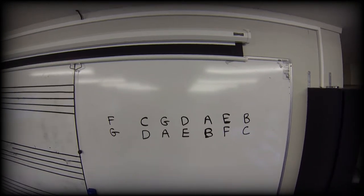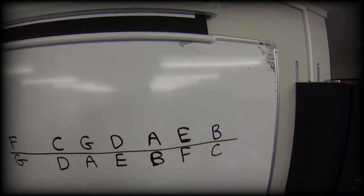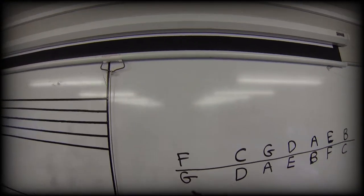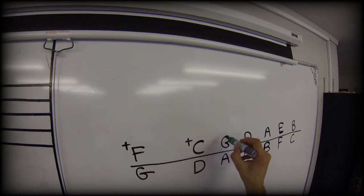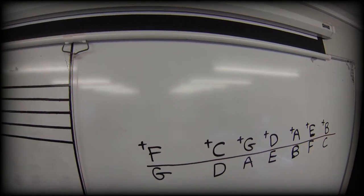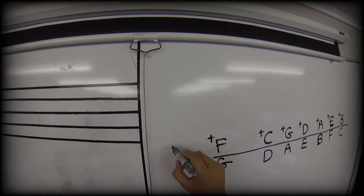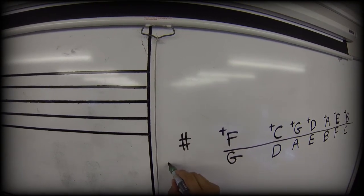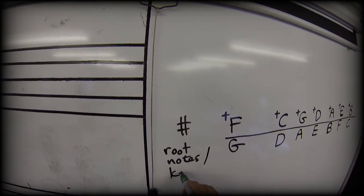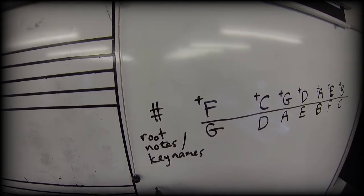I told you that story because it is one way in which we can learn our key signatures and how they relate to major scales. This row along the top here are the sharps in the order in which we add them, and down below is the order of root notes as we add those sharps. So the sharps are here and these are root notes, and they're also the key names. So let's look at how that looks on manuscript.